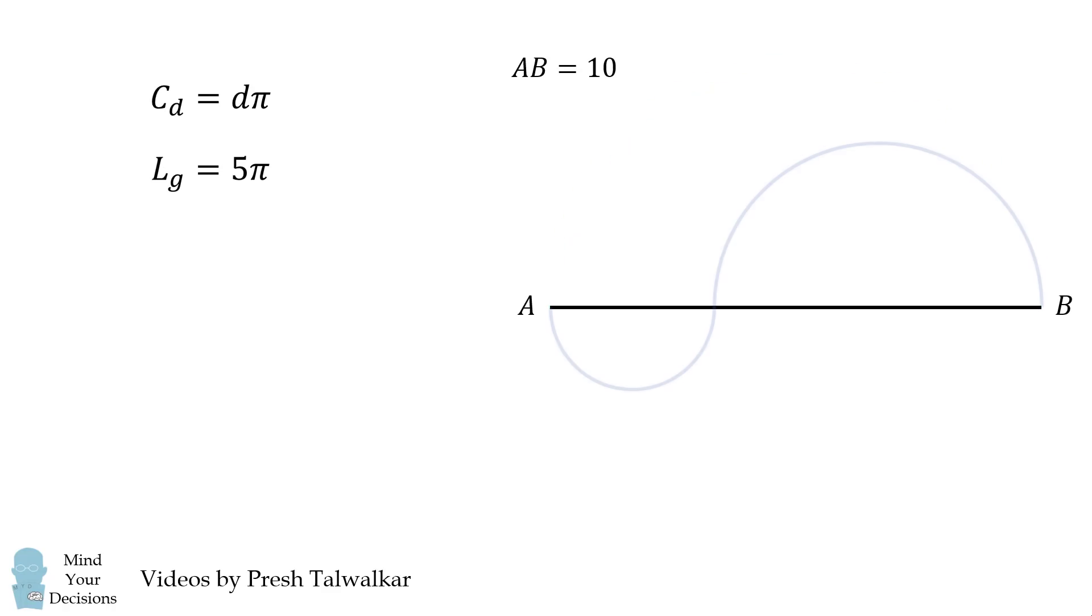We'll now calculate the length of the blue curve. The blue curve consists of two different semicircles. Let's label one diameter as x, which means the other will be 10 minus x.